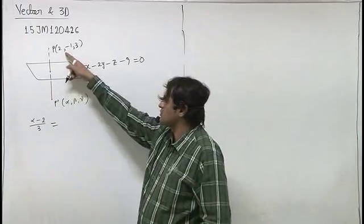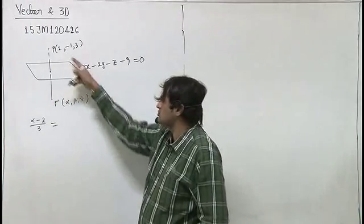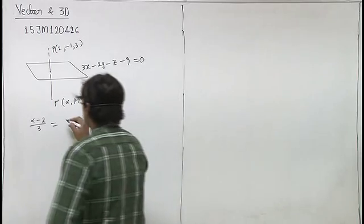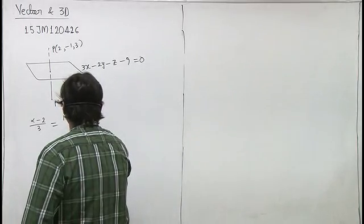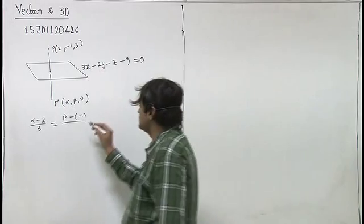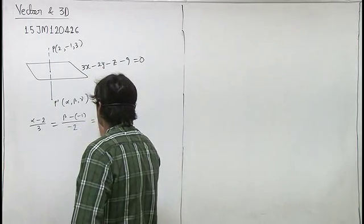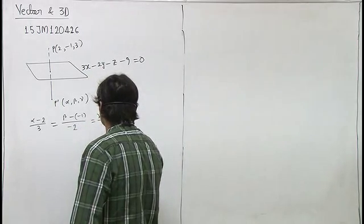Alpha minus 2 upon 3 equal to beta minus of minus 1 upon b, b is minus 2, equal to gamma minus 3 upon minus 1.